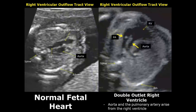In a double outlet right ventricle, we will see two arteries arising from the right ventricle — both the aorta and the pulmonary artery arise from the right ventricle.